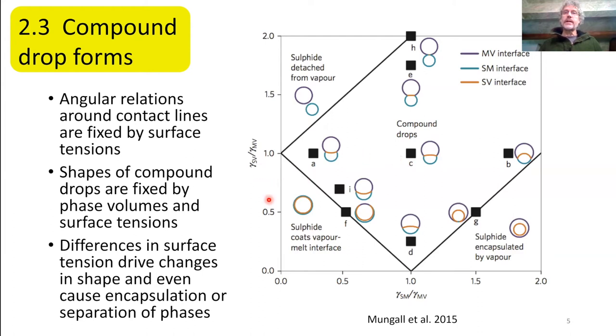So the angular relations are fixed by the surface tensions, the overall shapes are fixed by the phase volumes and the surface tensions, and the differences in surface tensions drive changes in the shapes. And if you plot the ratios of the surface tensions of the phases involved on two axes here, you can map out the shapes of the compound drops that would form, and if you're within this black box, they're stable. If you're outside this black box, the surface tensions are such that the system actually has lower surface energy for, in this example, having the sulfide and vapor phases being completely detached from each other, or here the sulfide would be completely encapsulated by vapor, or here the sulfide would completely coat the vapor phase.